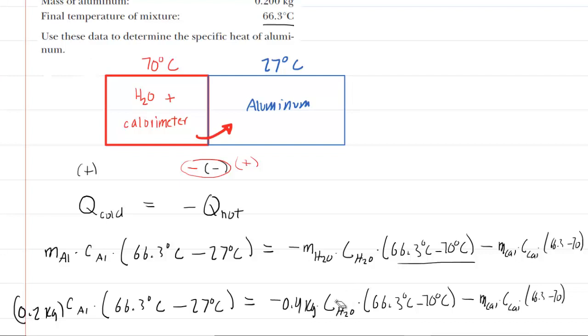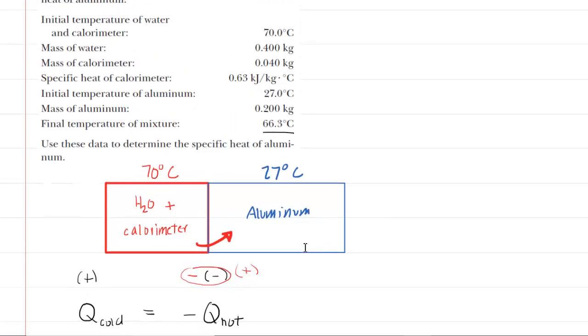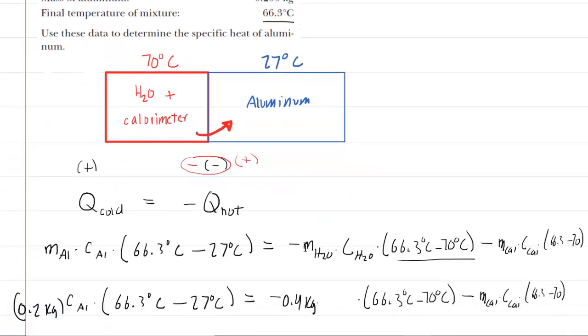The specific heat capacity of water, we can check the table. It's probably not given. So they're going to expect you to look that one up. And that has a known value of 4186, and this should be joules per kilogram degrees Celsius. So we'll fill that in. We are almost there.